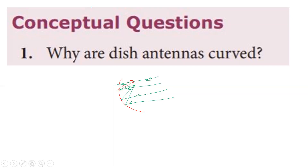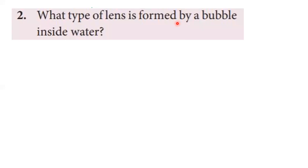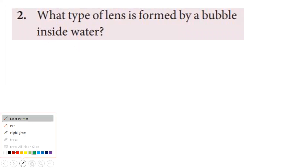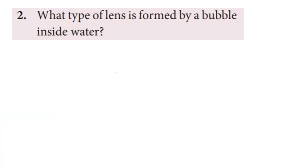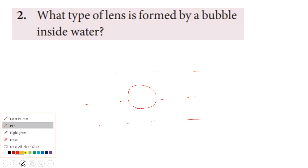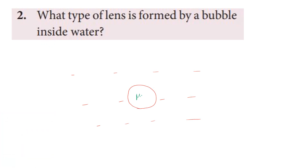Second question: what type of lens is formed by a bubble inside water? The bubble is called an air bubble. Water is the surrounding medium. The air bubble has a refractive index of 1, and it is placed in a water medium whose refractive index is 4 by 3. Since the medium's refractive index is greater than the bubble's, we analyze the focal length.